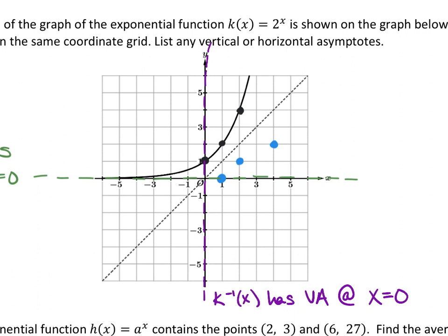Knowing I cannot touch or cross the vertical asymptote but can get really close, I start at the bottom, connect the dots, and graph the logarithm. A quick check: the exponential printed on the paper and the logarithm we drew should be reflections of each other over the y equal to x line. That visual reflection confirms we've done it right.